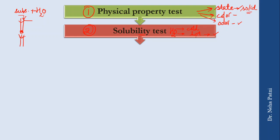Do not add excess substance — take a small amount, otherwise saturation occurs and the compound appears not to dissolve. Once dissolved in water, test with litmus paper: blue to red indicates an acid, and red to blue indicates a base. This gives a quick check of whether the compound is acidic or basic.